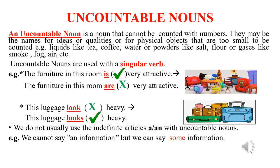Another example: this luggage looks heavy — that is the right answer because 'looks' is the singular verb which goes with the uncountable noun luggage. We do not usually use the indefinite articles a or an with uncountable nouns.